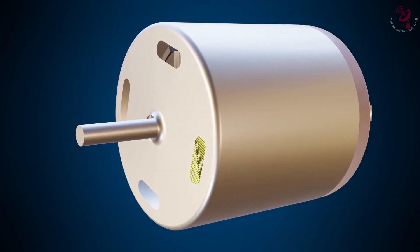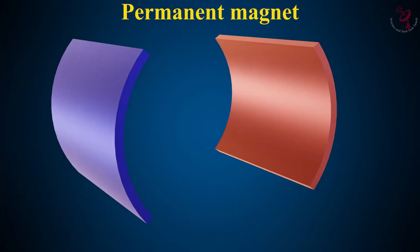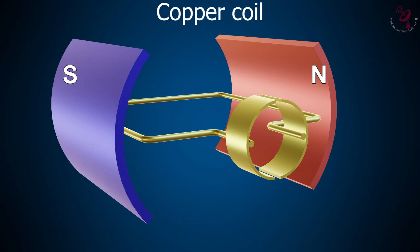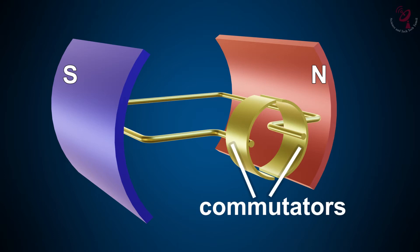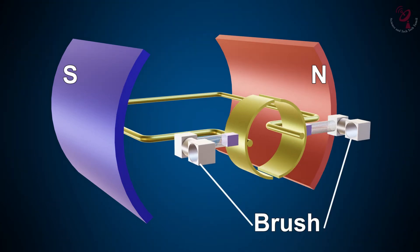The DC motor works this way. Take two different permanent magnets — south and north. Place a copper coil between the two magnets as a rotor. At the end of the copper coil, there is a fixed ring called a commutator. The commutator is split equally. At both ends of the commutator, brushes are connected.